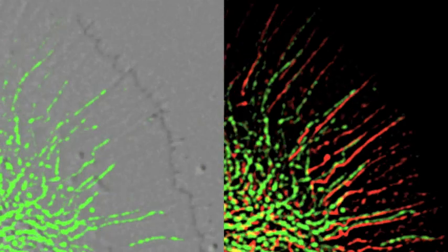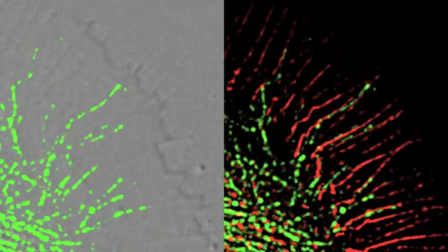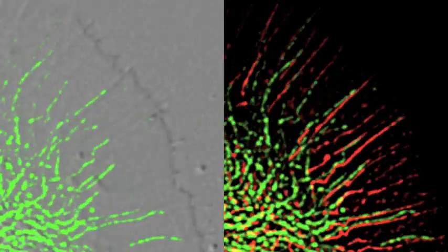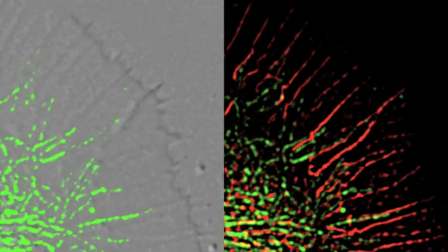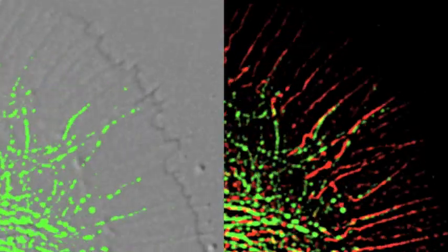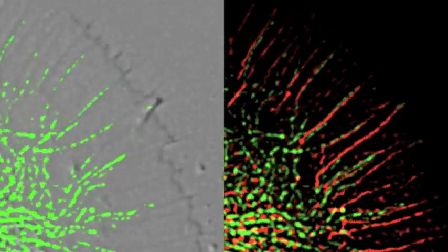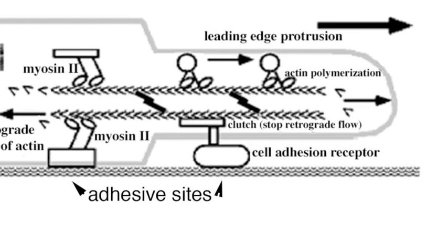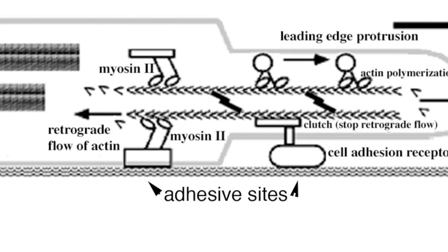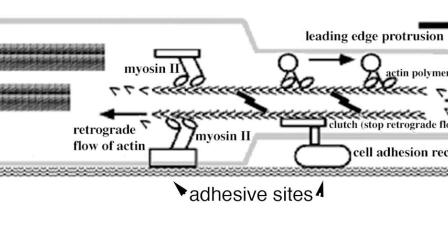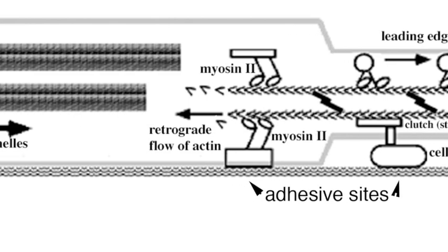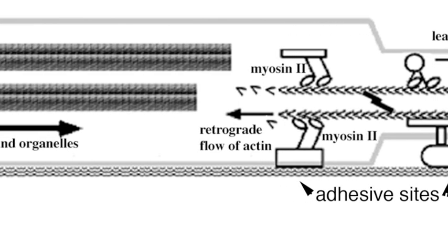This video shows microtubules in green advancing along bundles of actin filaments in red at the front edge of a growth cone. Actin assembly at the front advances the leading edge, followed by adhesions to anchor the leading edge, and then microtubules advance towards the adhesive sites.